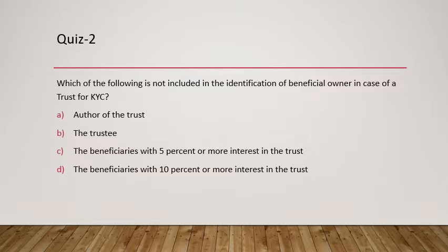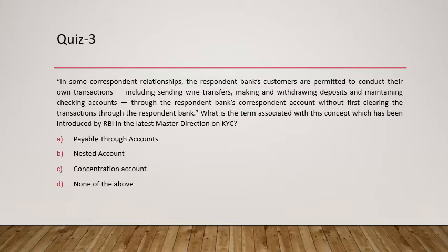Question two asks which of the following is not included in the identification of beneficial owner in case of a trust for KYC. Identification of beneficial owner for trusts has also undergone change. The author of the trust and the trustee were always included. The change is that beneficiaries with 10% or more interest in the trust are now covered, not 5% as before.